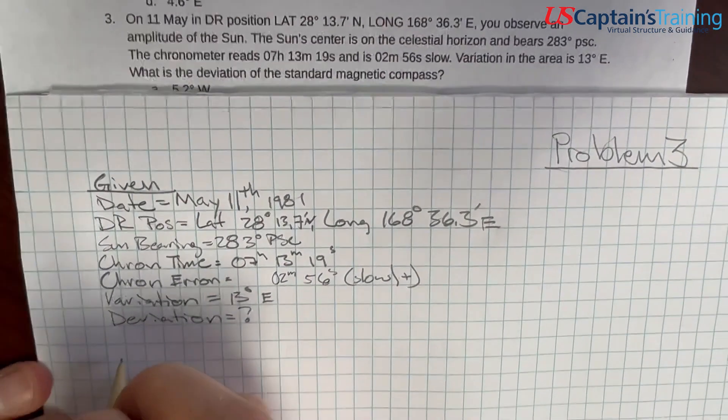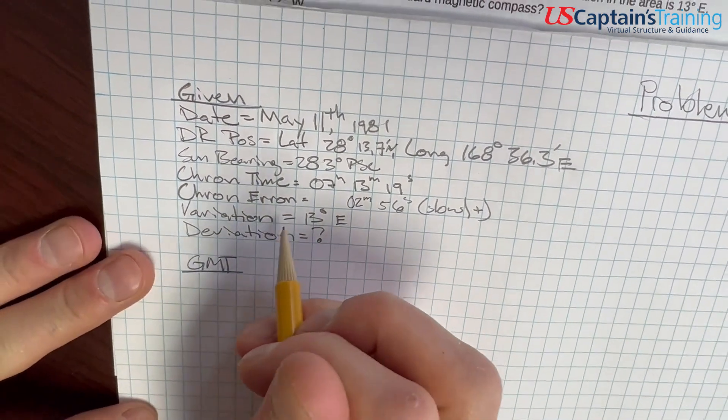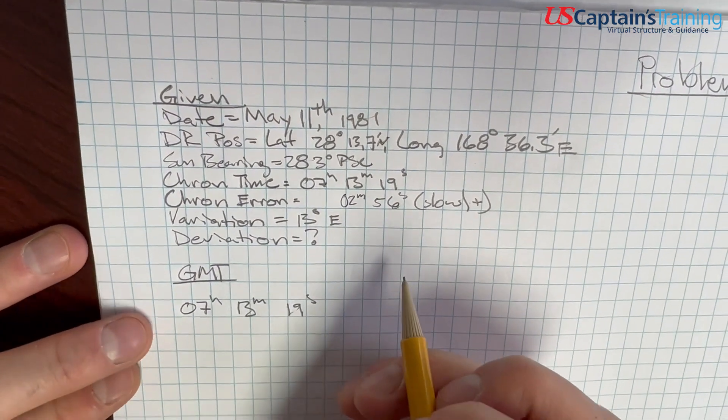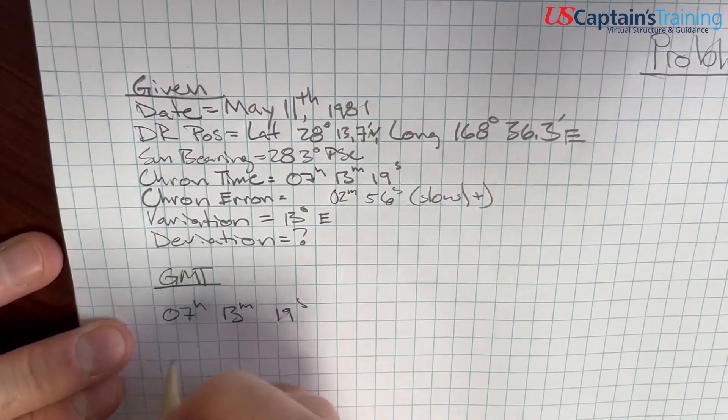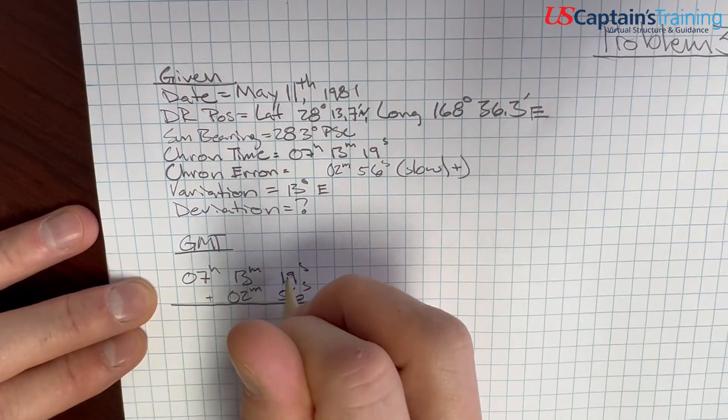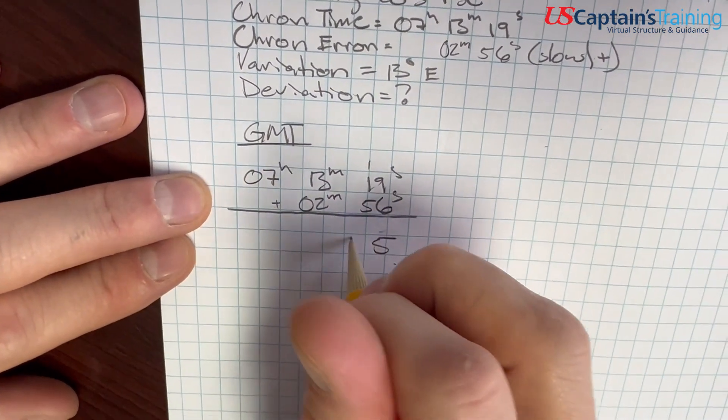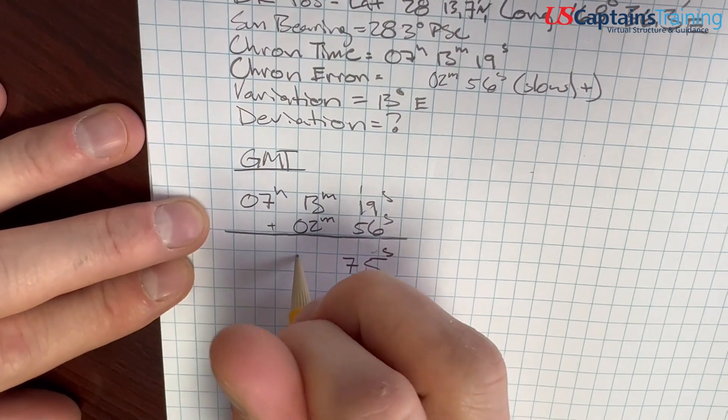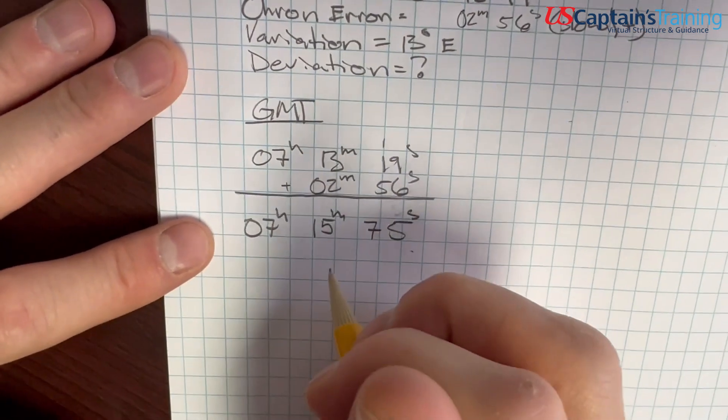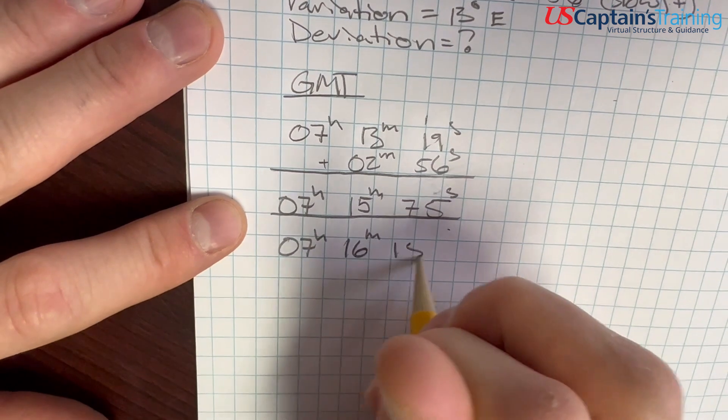First thing we do is get the GMT. That'll allow us to find our declination. GMT equals the chron time, which is 7 hours 13 minutes 19 seconds, and we apply the error. So we add 2 minutes 56 seconds. 19 and 56 is 75 seconds. That is 1 minute and 15 seconds, so we end up with 7 hours 16 minutes and 15 seconds. This is our corrected chron time.